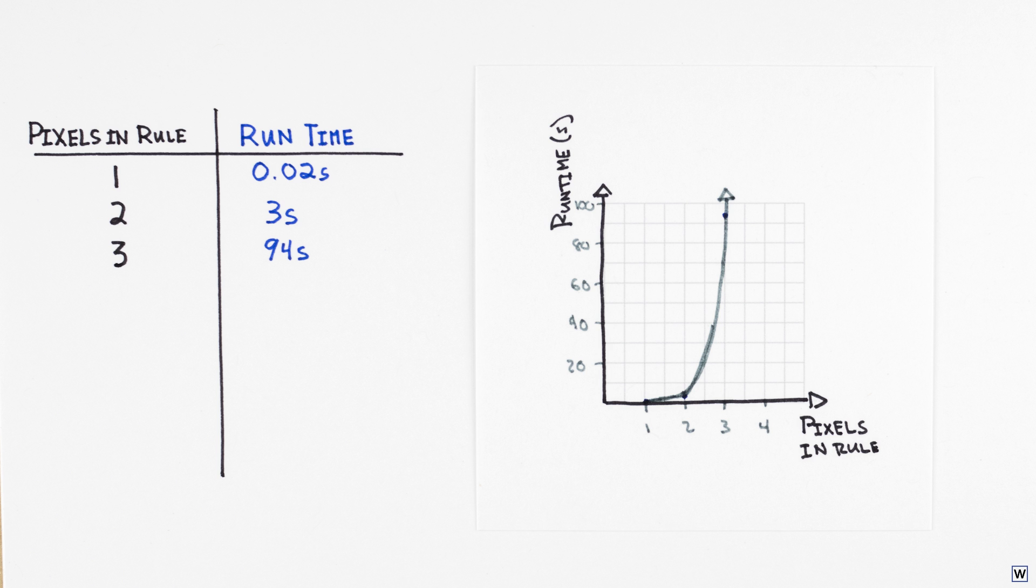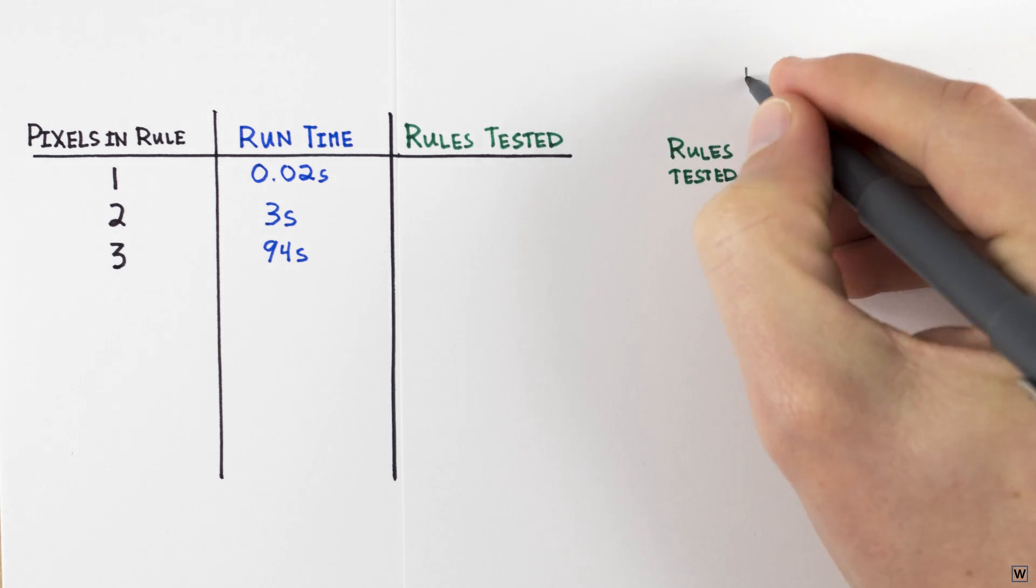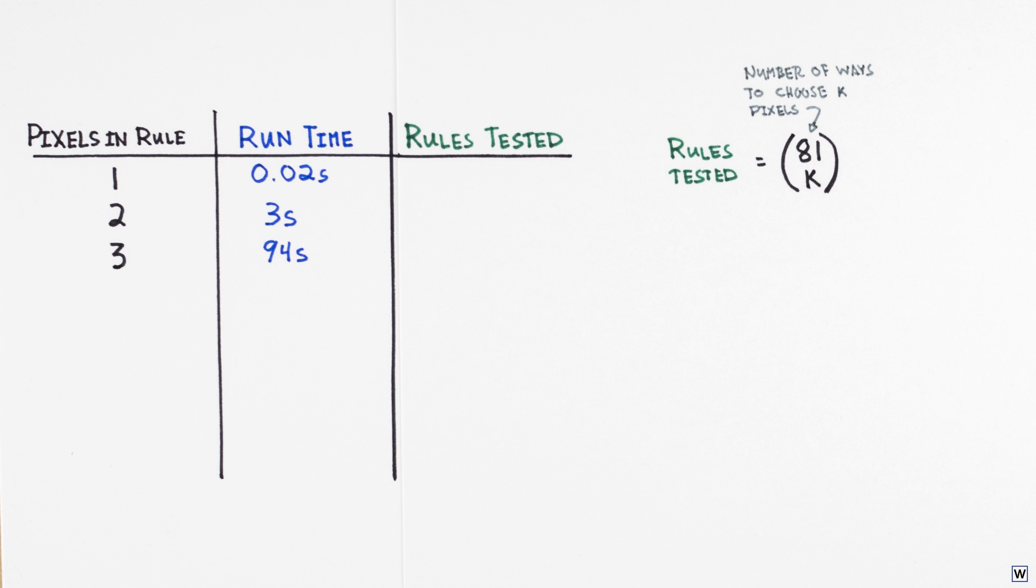Now, how does the number of rules we need to test depend on the number of pixels in our rules? If we call the number of pixels in a given rule k, then there will be 81 choose k ways to choose k pixels. And our rule could look for a 1 or a 0 for each of our k pixels. So for a given set of k pixels, there are 2 to the k possible rules. This makes for a total of 2 to the k times 81 choose k possible rules.